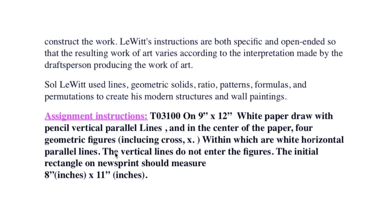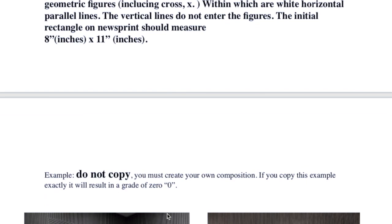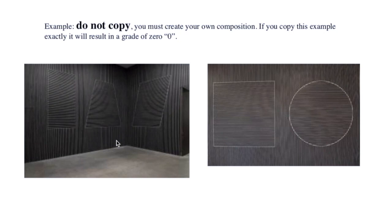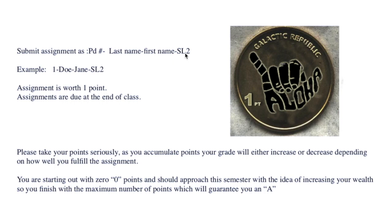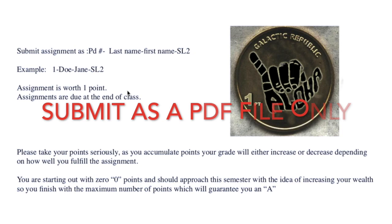The initial rectangle on newsprint should measure 8 inches by 11 inches — that means the center is approximately the center, whatever you'd consider a center. Here are some examples of what was done previously with geometric forms. This person interpreted the center as this — you could say that's the center. Submit the assignment as: period number, last name, first name, SL2 (Sol LeWitt 2). For example: one_doe_jane_sl2. This should all be submitted as a PDF file.